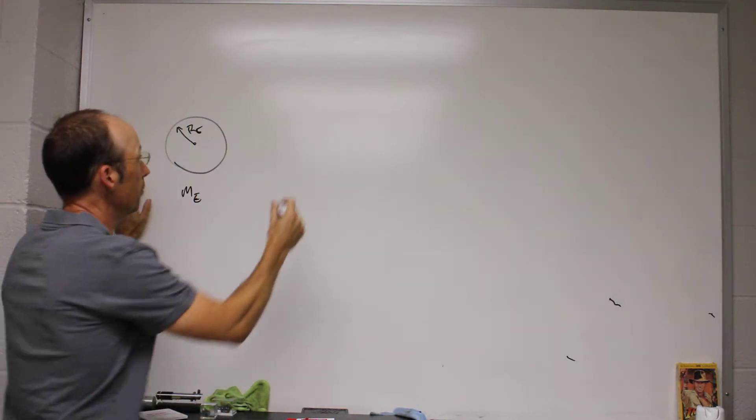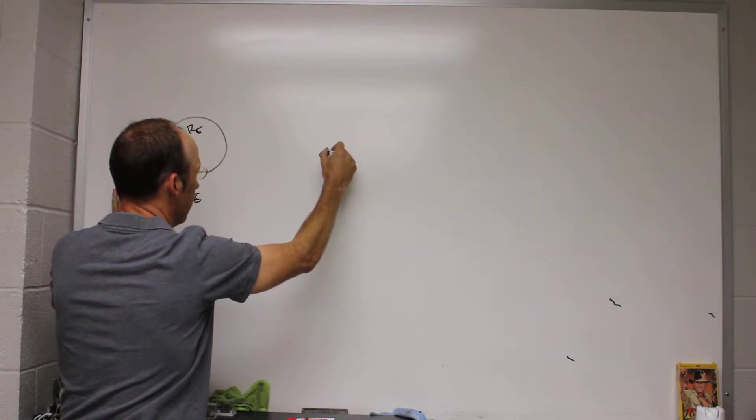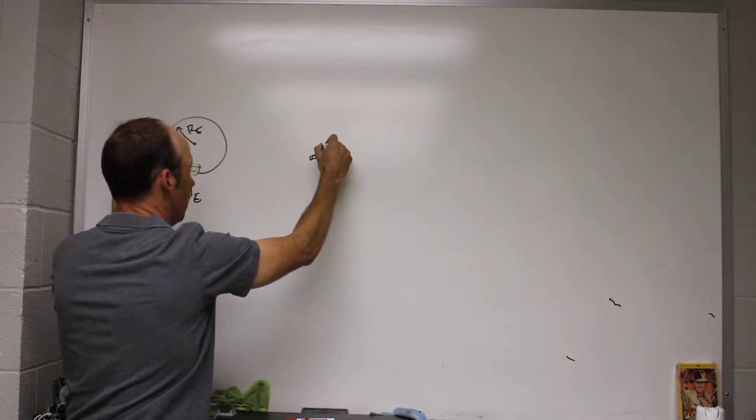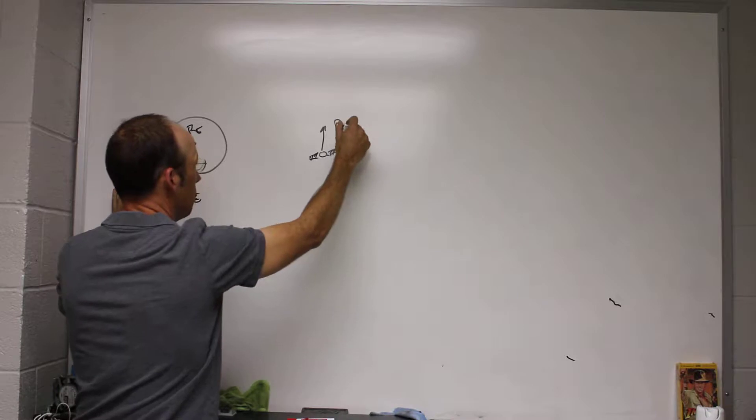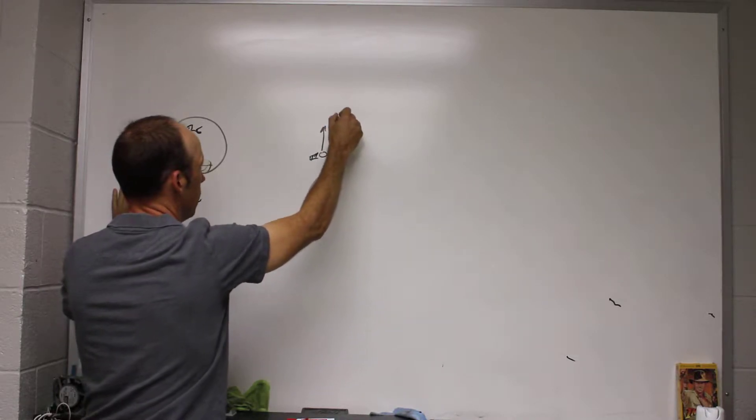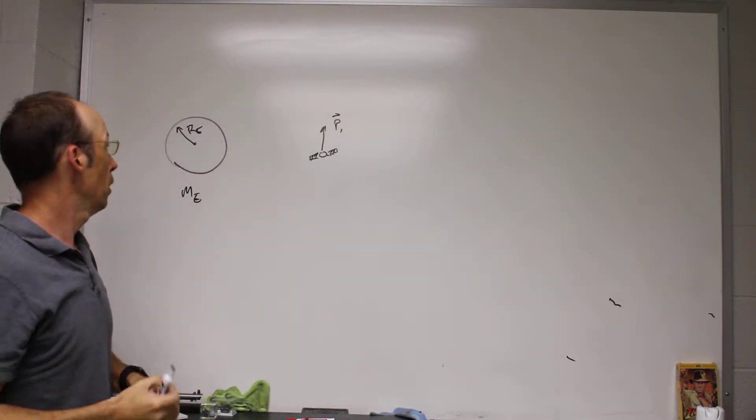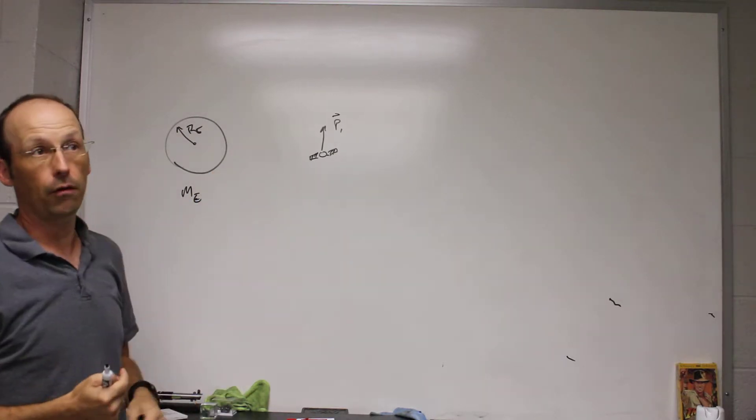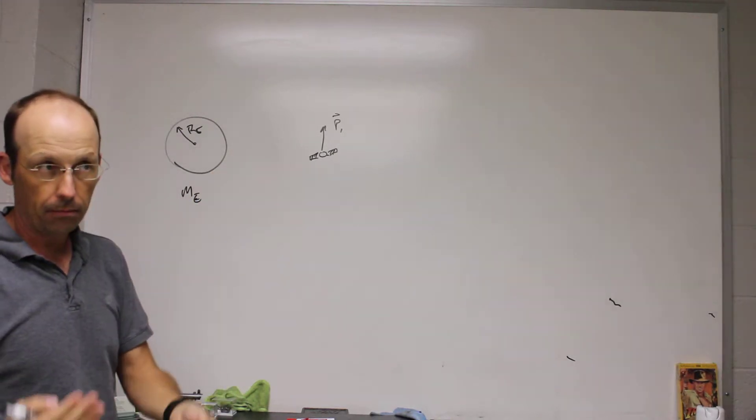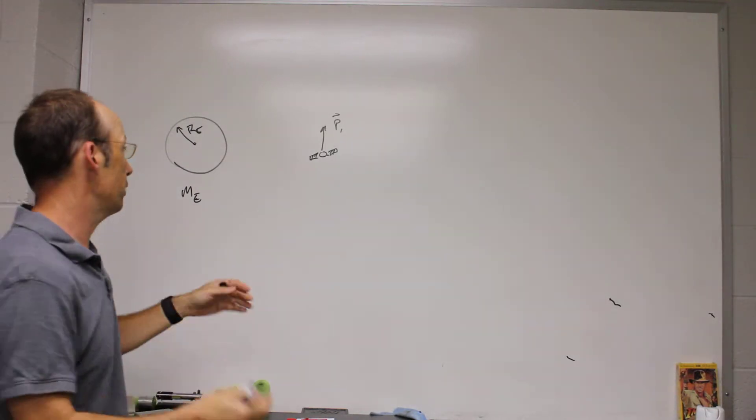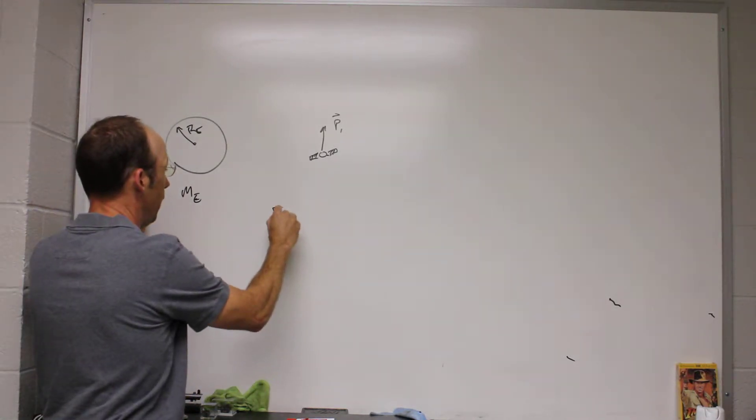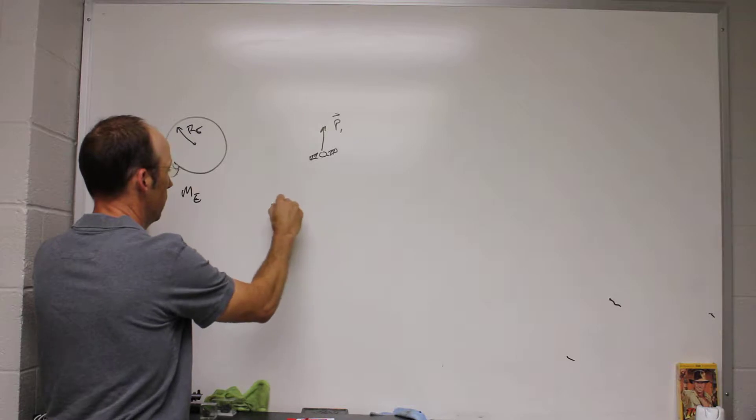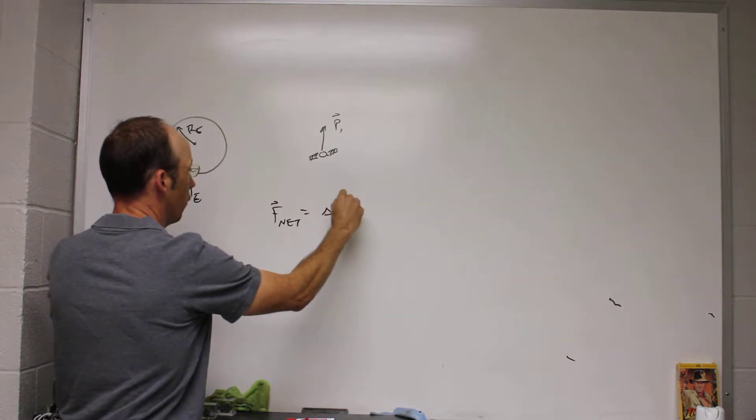And I have some space satellite over here. It could be anything, but this one has little solar panels. And it has some momentum, P, let's just call it P1. So in this situation, we have this satellite moving. What changes the momentum? The force. A force changes. So I would know that F net equals delta P over delta T.